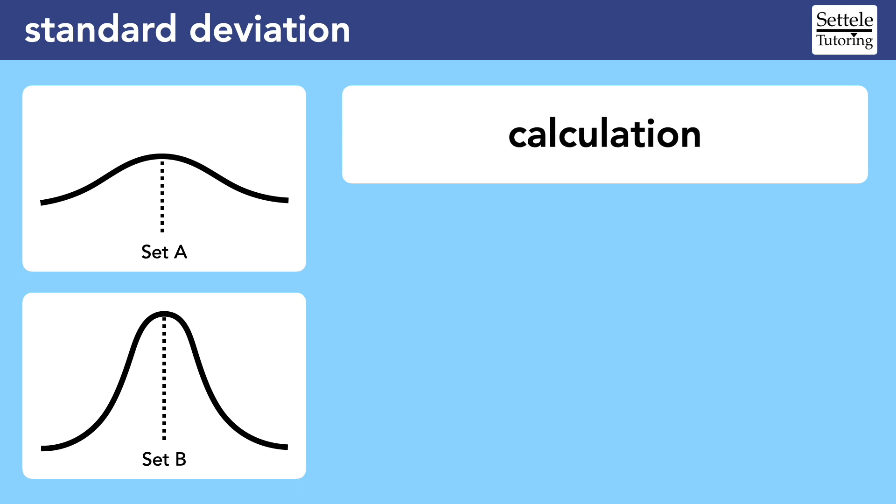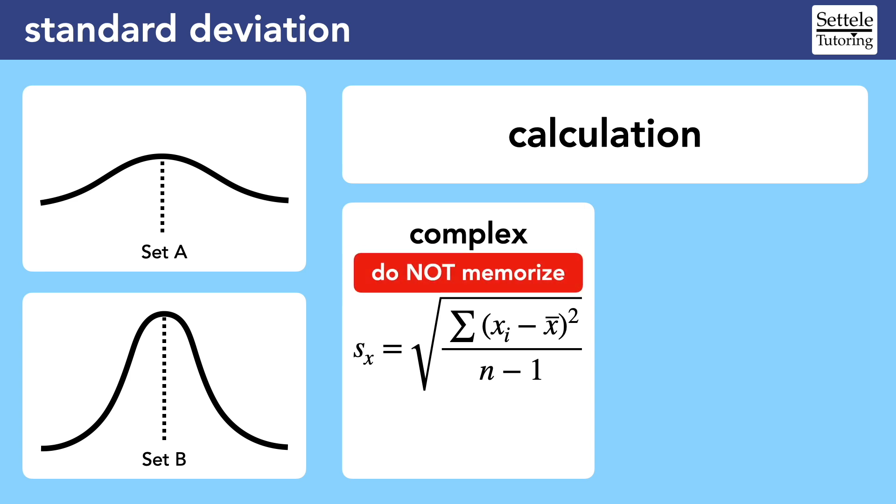In an AP statistics class, you would learn how to use this complex formula to calculate the standard deviation of a set. Don't worry, you never need to calculate standard deviation on an SAT. Do not bother memorizing this formula. Still, this part here represents the difference between each data point and the mean, or average, of the entire data set. The formula is literally averaging how far each point is from the center.